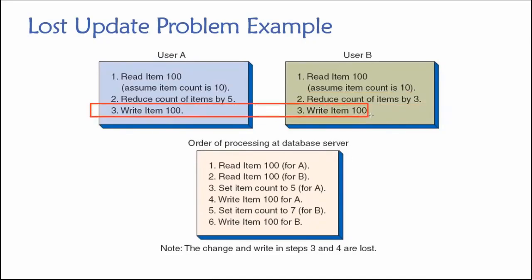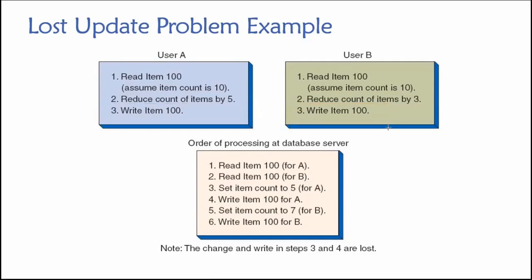At time three, both users instruct the database to save the results — commit those changes, make them permanent. As human beings, what we would expect the result to be: we start off with 10 units in inventory — that's just the big picture. We have 10 units when we start.